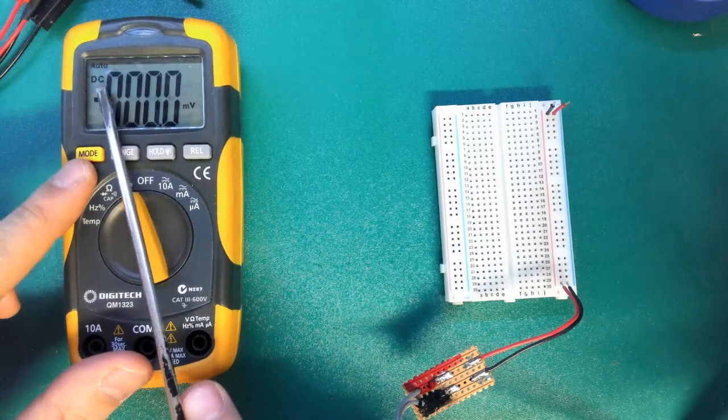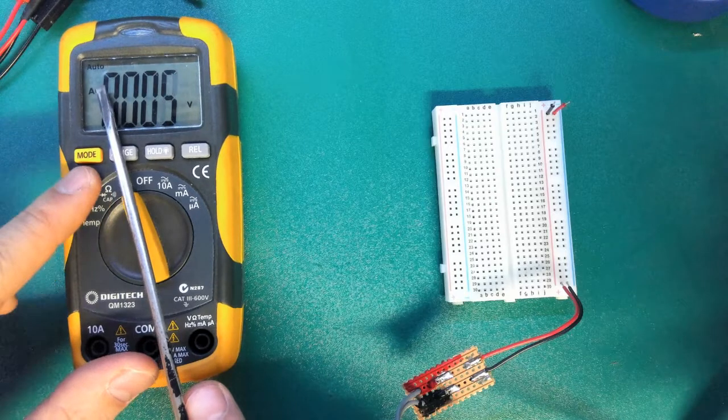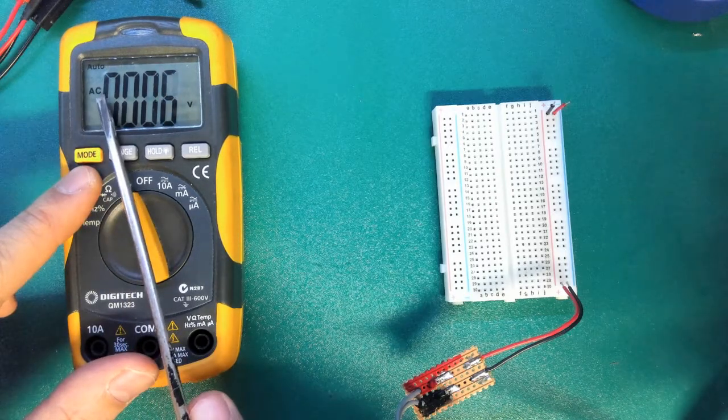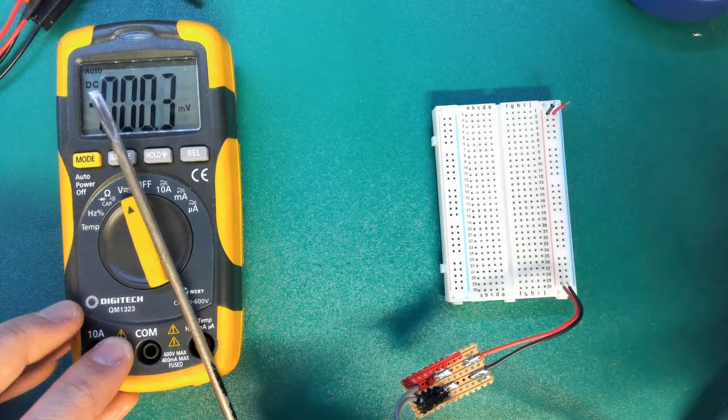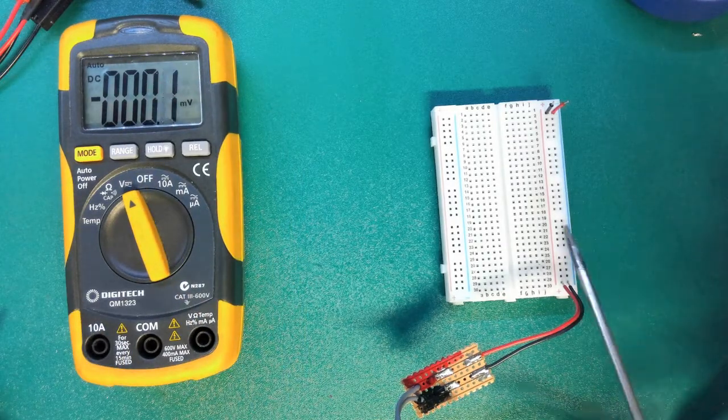You can see by default it's set to measuring DC. If you press this mode button it will change to measuring AC. So we've set it to measuring DC and I've got some voltage here coming in on this voltage rail.